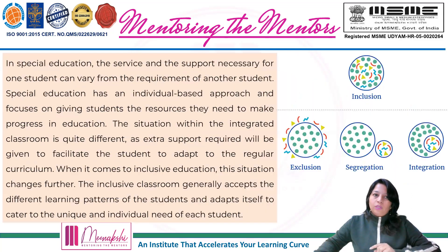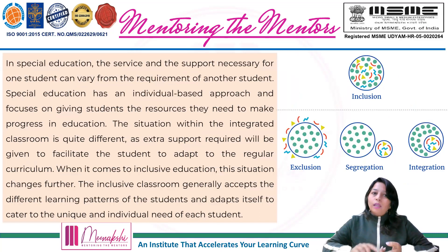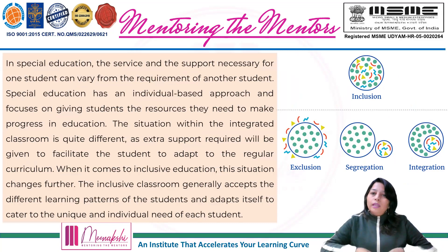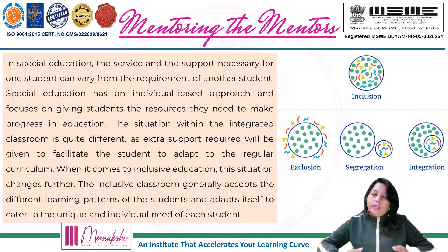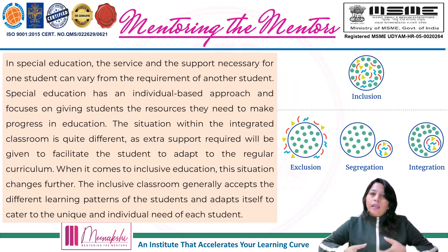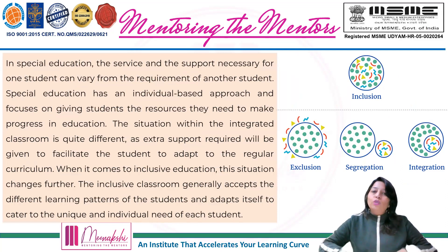That is done in special education. In special education, the support necessary for one student can vary from the requirement of another, because their disabilities are different — some minor, some major, some types of disabilities are different. Some are visually impaired, some have hearing problems, some have ambulation issues — different kinds of disabilities. Accordingly, their needs are different, and they provide different support.